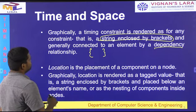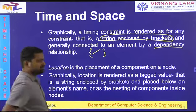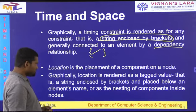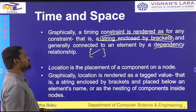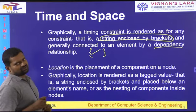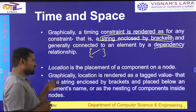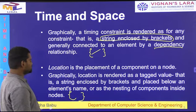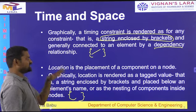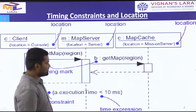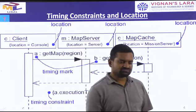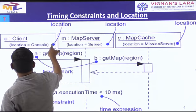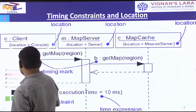Location and time are represented in these brackets, whereas location is the placement of a component on a node. Graphically, location is rendered as a tagged value — a string enclosed in brackets — placed below an element's name, or nested in components inside nodes. Seeing the representation of time and space, location is represented in square brackets.